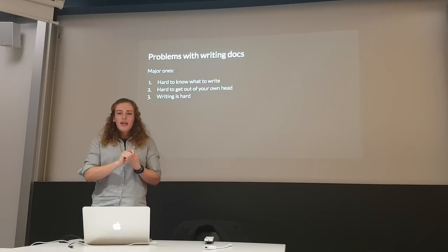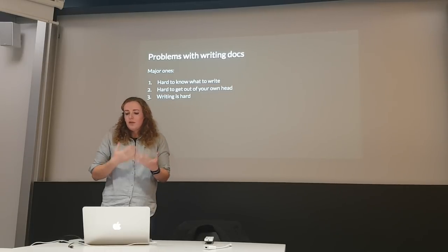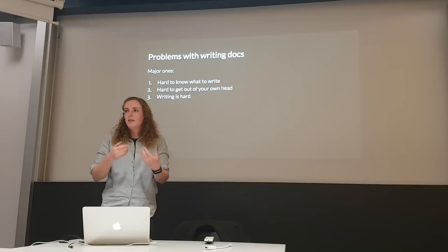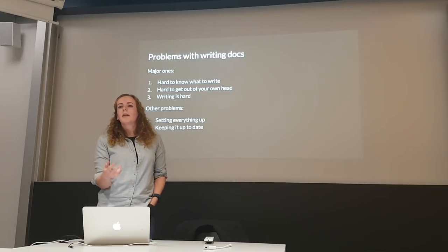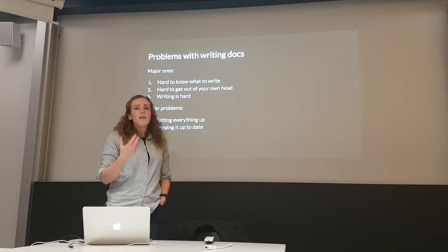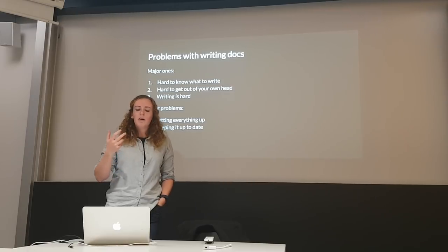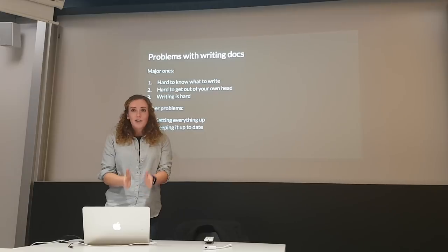Third problem: even if you know what you want to write about and what angle you want to take, some people also just find the writing bit very difficult. I'm going to go through some specific strategies that will just make writing more effective and more user friendly. I'm also going to cover two more practical problems: first, setting documentation up in the Haskell ecosystem — where do you put your documentation, where does it live? And second, maintenance — you've written some documentation, but how do you make sure it doesn't break and you keep it up to date?